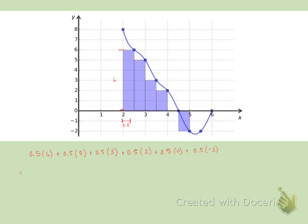So notice that we can factor out that 0.5. And when we add up these numbers, we will get 14. So this will be 0.5 times 14, or 7. So the approximate area under this curve is 7 square units.